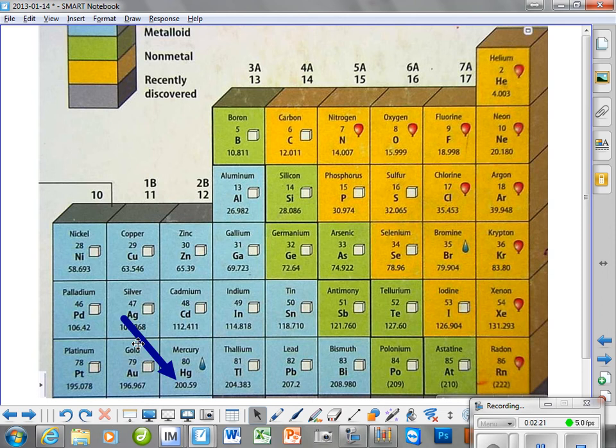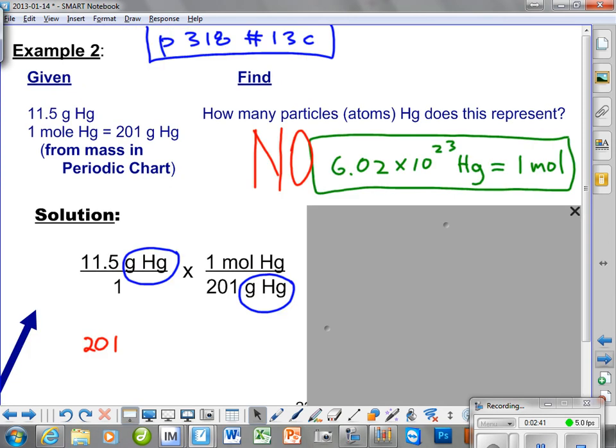The mole of 6.02 times 10 to the 23rd atoms of mercury is going to weigh 200 point, or 201 grams when we round it. I'm going to take this 5 and I'm going to round the 0 up to a 1 which is what we're doing back here. So let's go back and you see where we got that little dude from. And from the periodic chart we know that 201 grams of mercury is going to be equal to 1 mole of mercury.